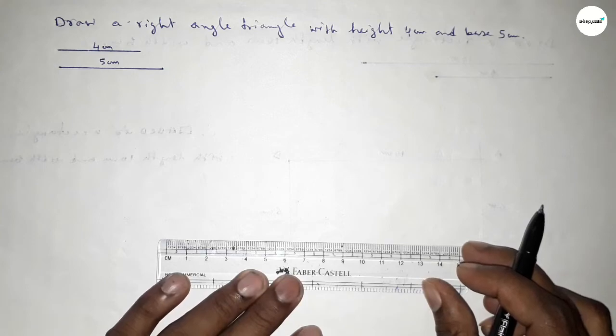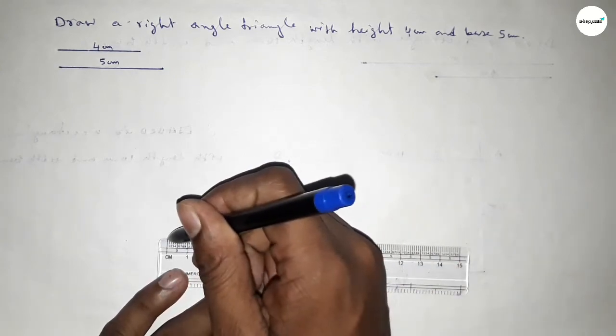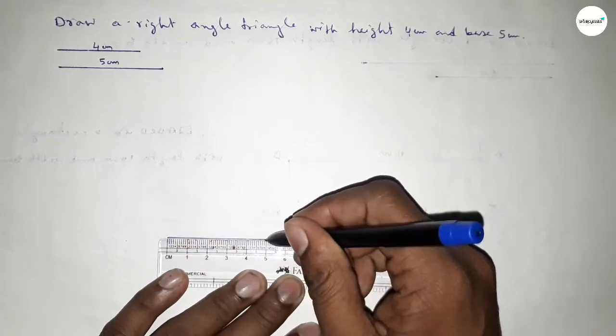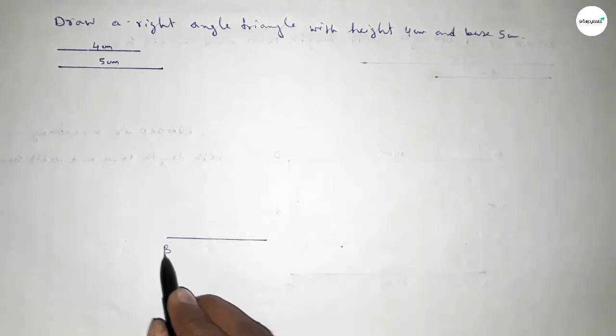Now we have to draw here a line of length 5 centimeters, so this is the base of the triangle, so this is 5 centimeters. Taking here point B and here C, now first we have to draw a 90 degree angle on the point B.